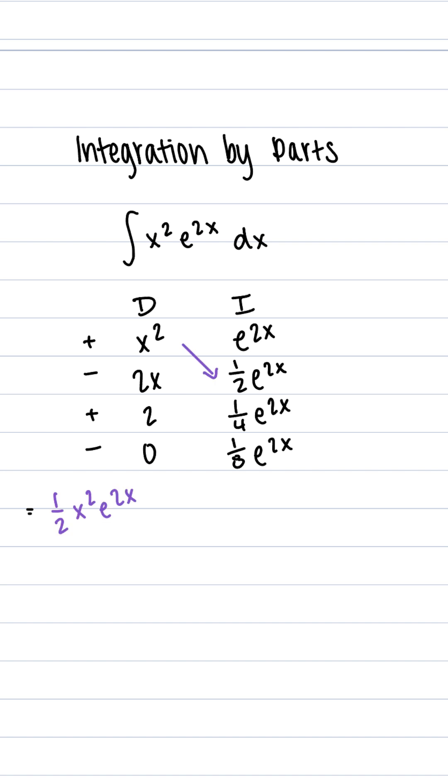So now what we're going to do is we're going to multiply diagonally. We start off with x squared and we multiply that by 1 half e to the 2x and make sure that first sign is positive.